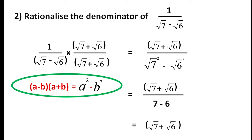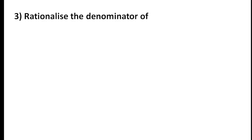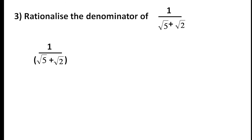So the answer is root 7 plus root 6 over 1, which is root 7 plus root 6. This is a very important result. Now let's go to the next question: rationalize the denominator of 1 by root 5 plus root 2. This denominator has a plus sign.